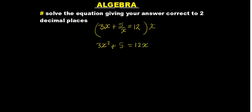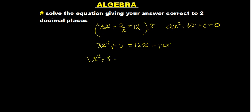Keep in mind the order we need is Ax squared plus Bx plus C equals 0. So here we need to subtract 12x on both sides — minus 12x — giving us 3x squared plus 5 minus 12x equals 0. That gives us 3x squared minus 12x plus 5 equals 0.